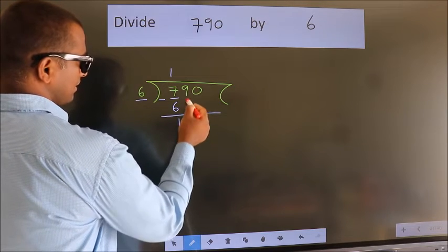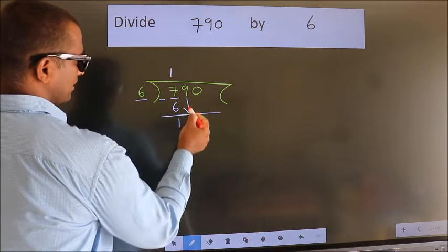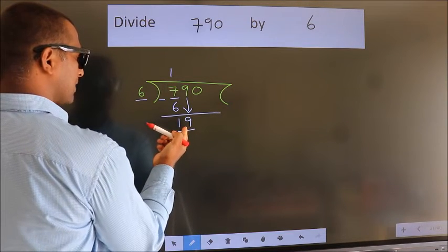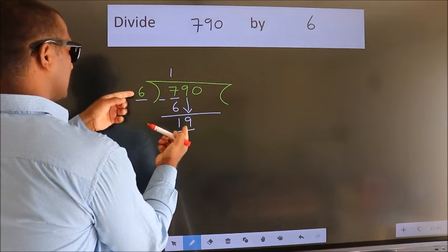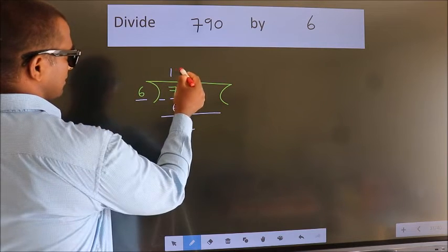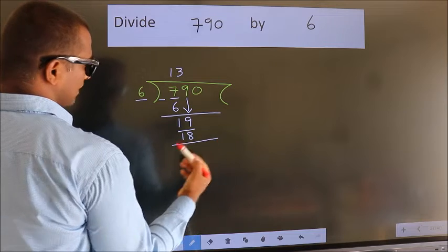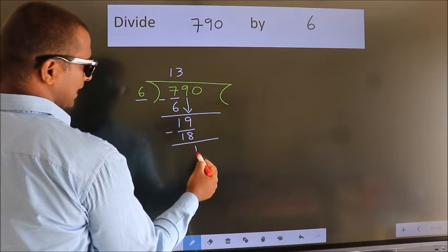After this, bring down the beside number. So 9 down. So 19. A number close to 19 in the 6 table is 6 threes, 18. Now we subtract. We get 1.